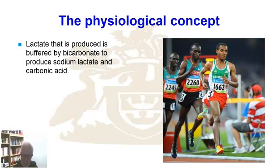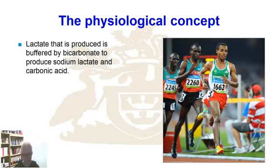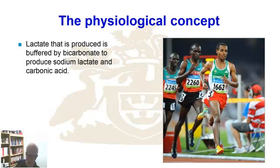The bicarbonate interacts with the lactate. The net result is we produce two compounds: sodium lactate and carbonic acid. The sodium lactate is an important consequence, but it's not the part we're interested in in terms of ventilatory control mechanisms. The carbonic acid itself is then acted upon by a key enzyme — carbonic anhydrase. The enzyme never ends up in the final outcome of the reaction, but by interacting with carbonic anhydrase we end up producing CO2 and water.